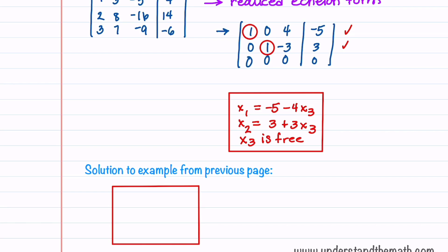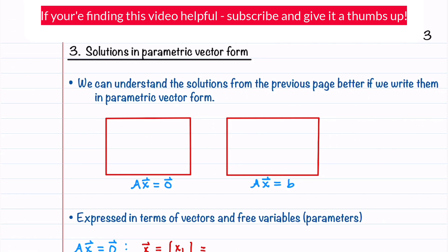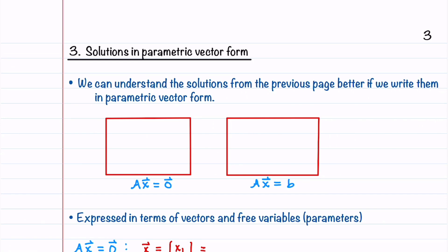Let's compare this to the solution from our homogeneous system: X1 = -4X3, X2 = 3X3, and X3 is free. The difference between the two solutions is the constant -5 in X1 and the constant 3 in X2. We can understand these solutions better by writing them in parametric vector form.